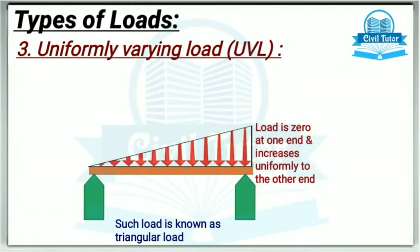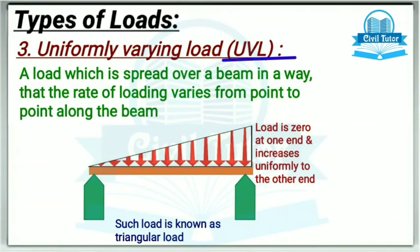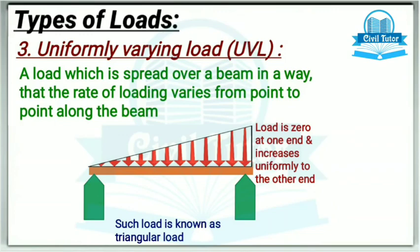The third one is uniformly varying load, or simply UVL. It is defined as a load which is spread over a beam in a way that the rate of loading varies from point to point along the beam. In this case, the load is zero at one end and increases uniformly to the other end, and such type of loading is known as triangular load.